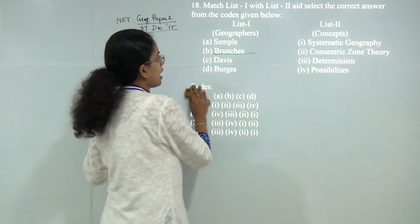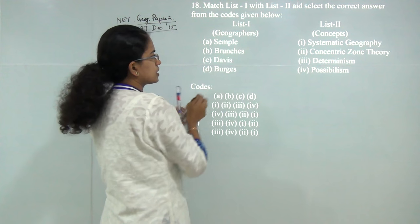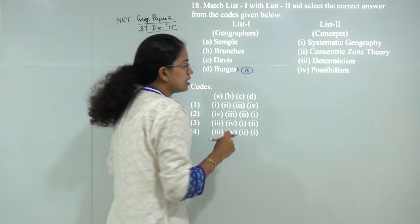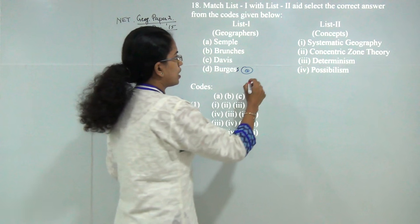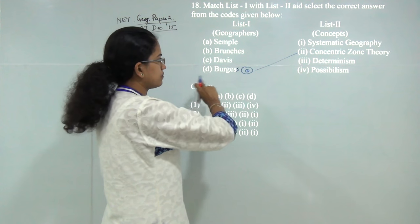Next: match the geographers and concepts. Burgess gave the concentric zone theory. We've discussed this in urban models. The answer is 2—concentric zone theory. You can refer there for detail.